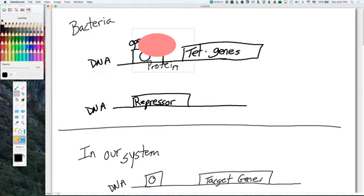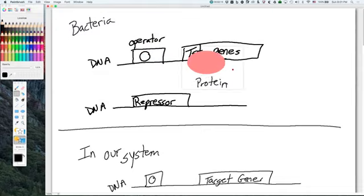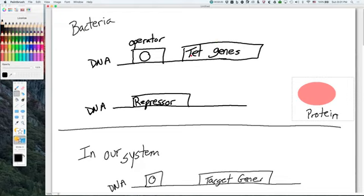If, in fact, the bacterium is exposed to tetracycline, which is an antibiotic, it can kill the bacteria. The TET repressor protein binds to tetracycline and it falls off. This allows transcription to occur of these genes and you get the TET proteins and the bacterium can be, therefore, resistant to tetracycline.